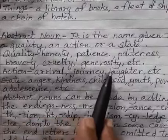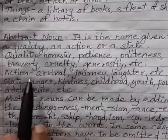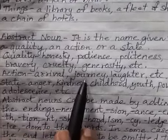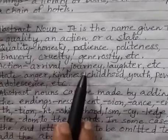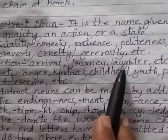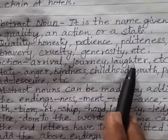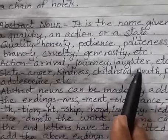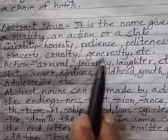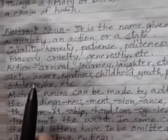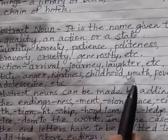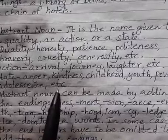Abstract nouns can also denote actions, such as arrival, journey, and laughter. Journey means travelling from one place to another. Laughter always brings happiness — if we don't laugh, we will have only sorrow in our life. These are examples of abstract nouns as action words.